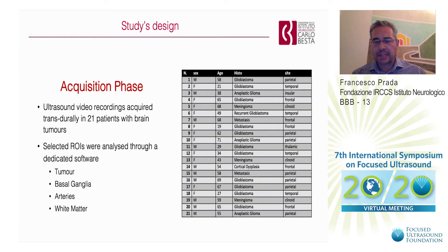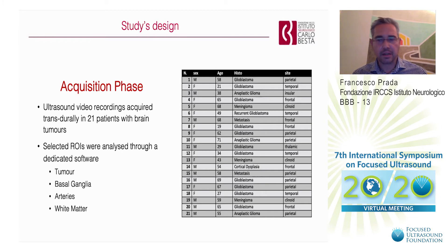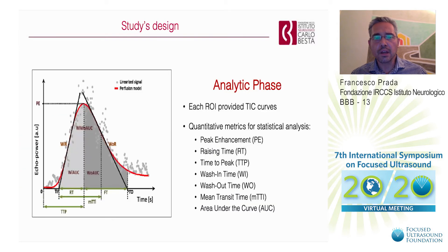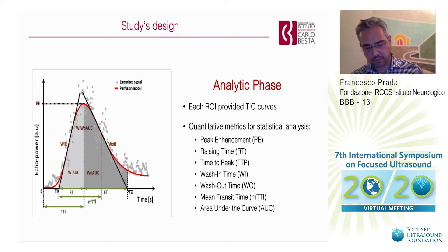We analyzed data obtained in 21 patients undergoing surgery for brain tumors. In each patient we were able to detect three different regions of interest: an artery as a reference, the brain tumor, and a brain structure, either basal ganglia or white matter. In all cases we performed a quantitative analysis using our software, obtaining time intensity curves. The two parameters studied were peak of enhancement and area under the curve, which proved to be the most informative from a qualitative standpoint.